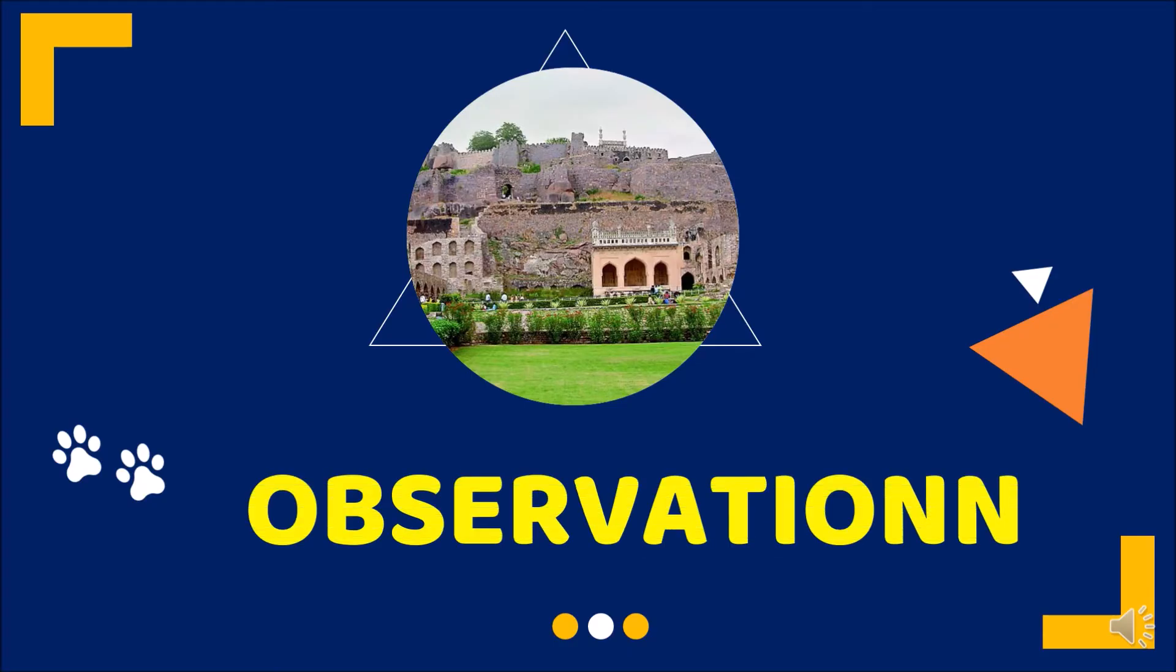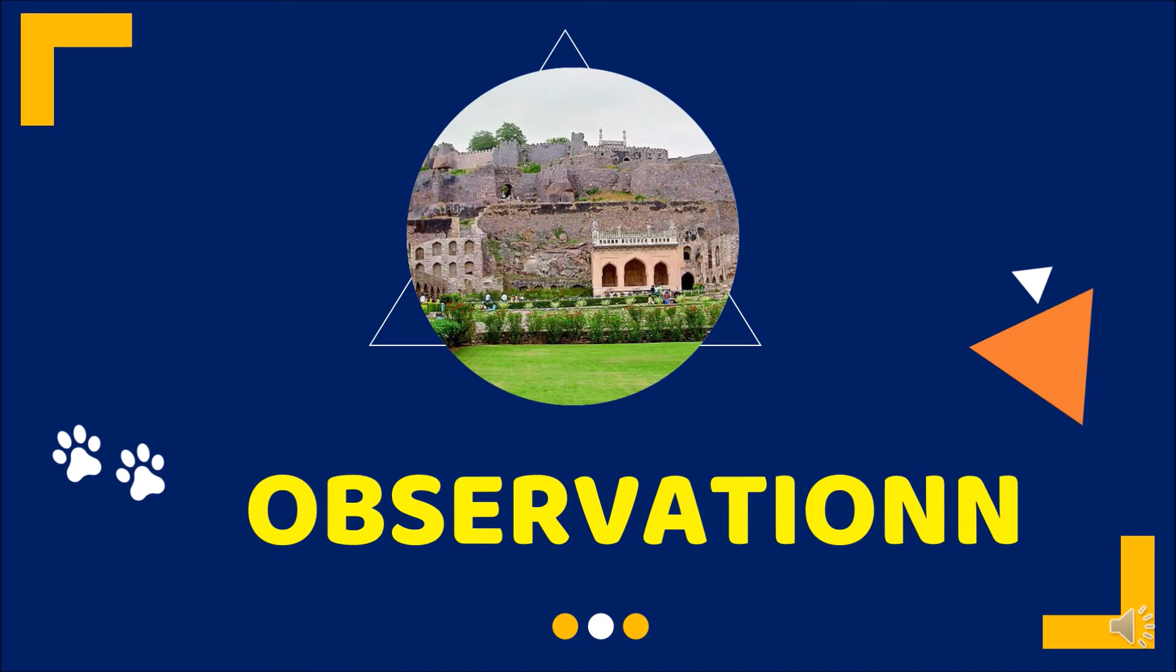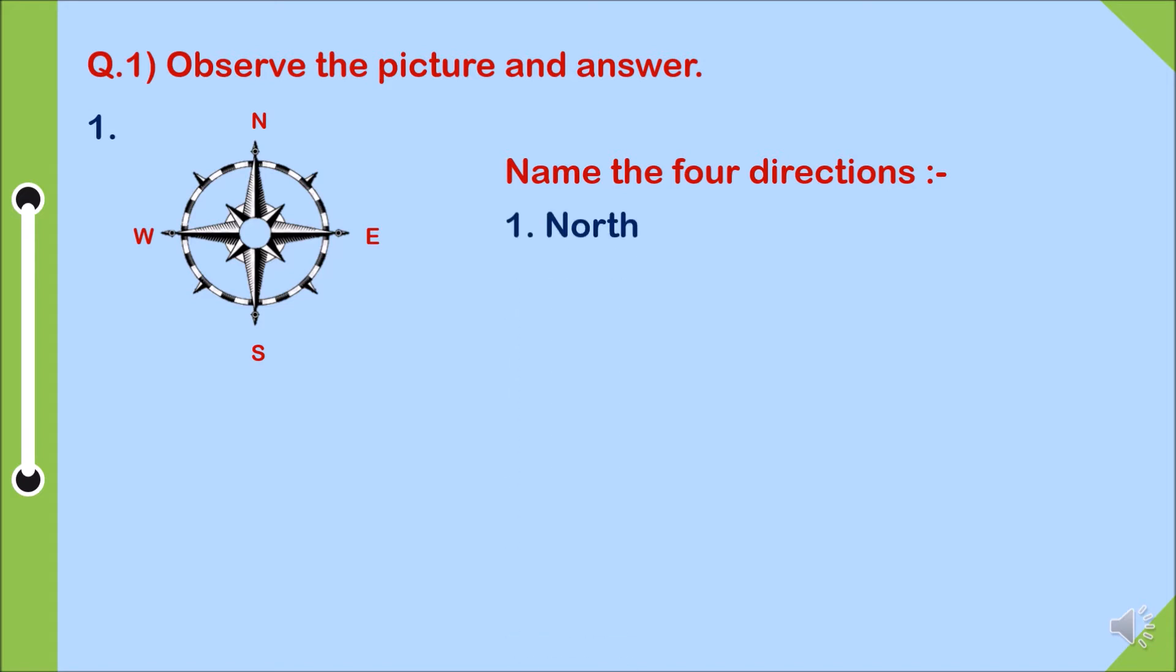Now we will see the observation section. Question one, observe the picture and answer. One, name the four directions. Here are clues: N, E, S, W. N for North, E for East, S for South, and W for West.